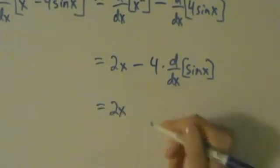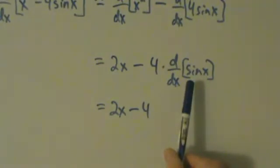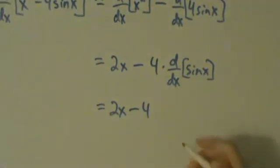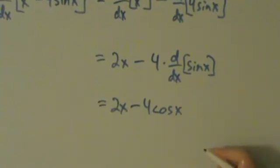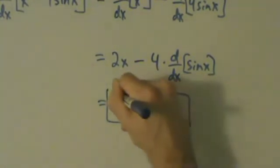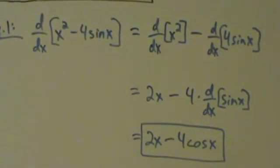The last step is 2x minus 4. What's the derivative of sine of x? It's cosine of x. So this is 4 cosine of x. That's our answer.